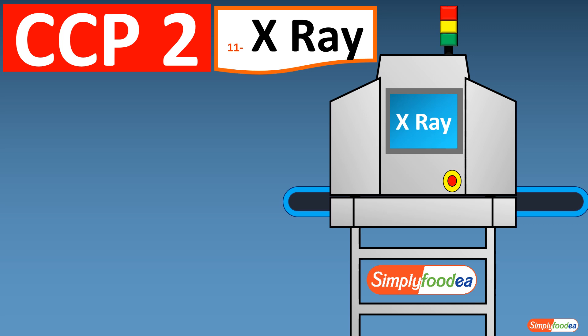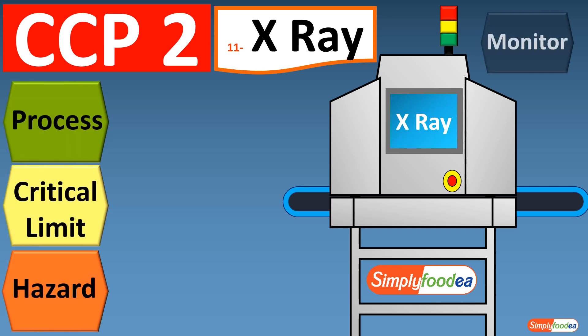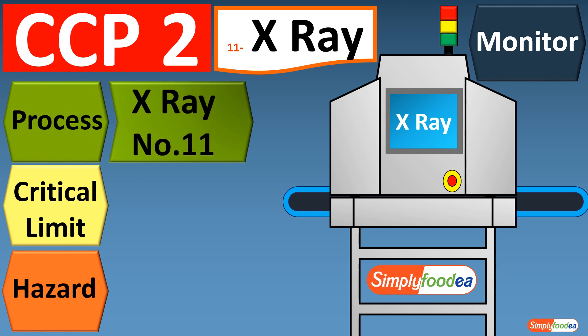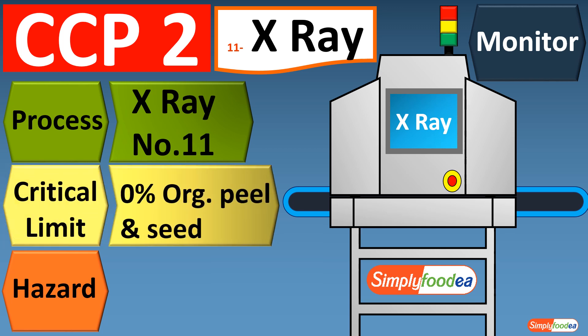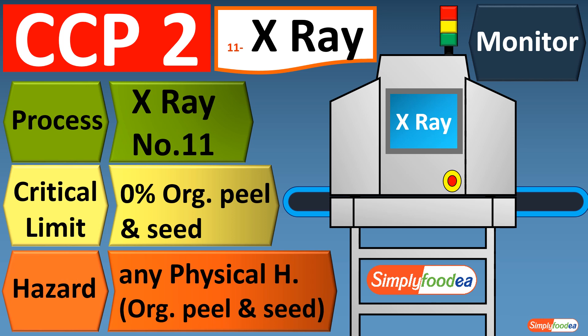The second CCP in our example is the X-ray. The four main points are: the process, the hazard, the critical limit, and the monitoring. In the X-ray, the process will be X-ray process number eleven. The critical limit will be zero percent orange peel and seed.